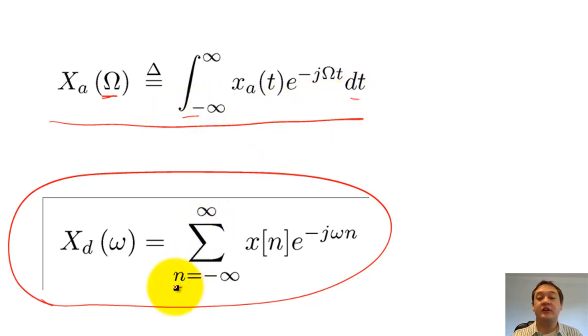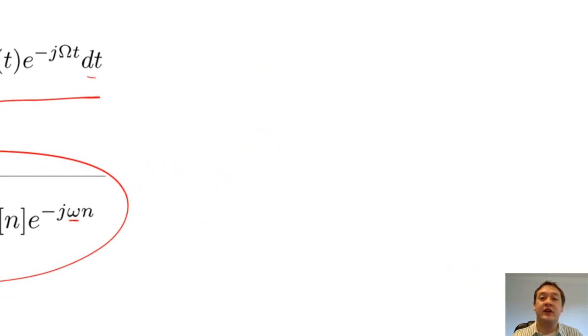We change the integral to summation to accommodate this discrete nature, and we use samples rather than time t, and we use lowercase omega to represent digital frequencies. The DTFT then creates a continuous function x sub d of omega.